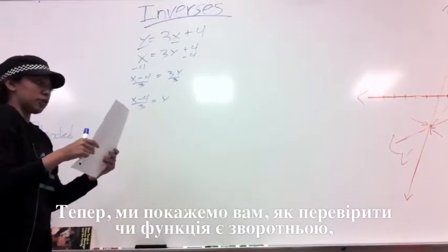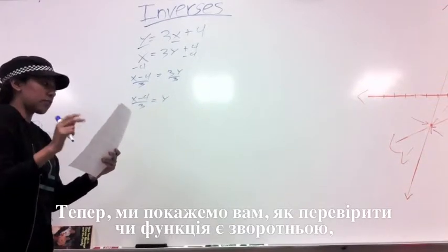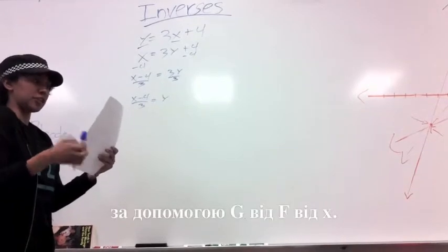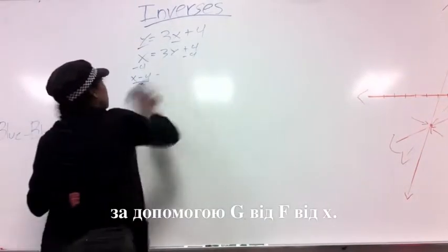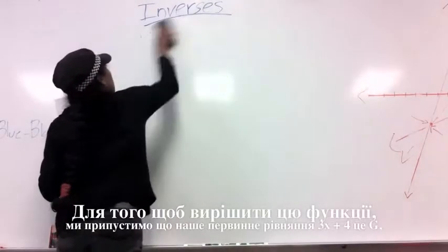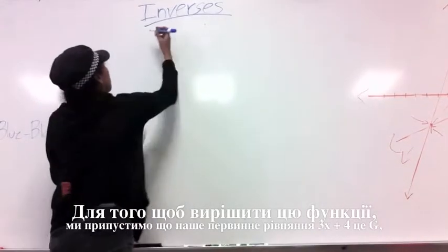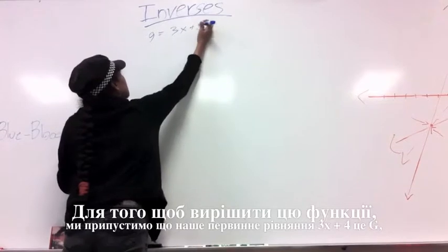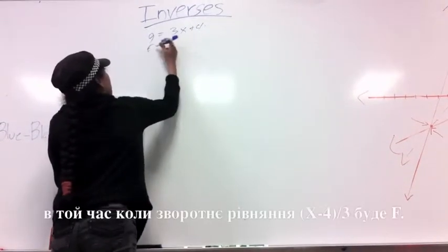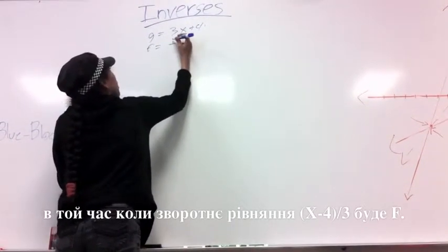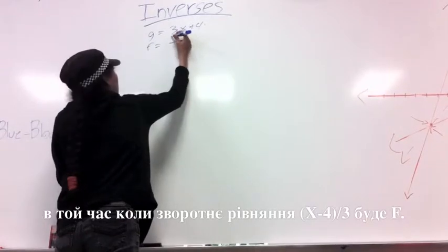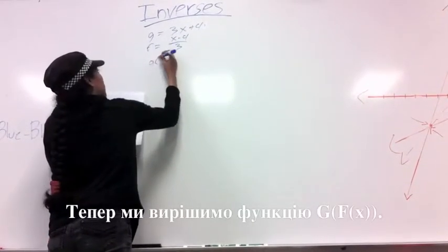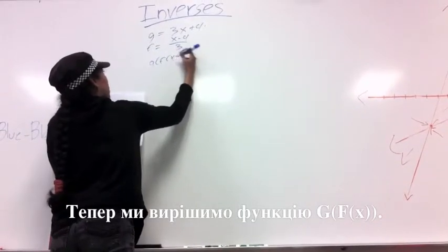Now we will show you how to check if a function is inverse by using g of f of x. For this problem, we will have g equal 3x plus 4 and f equal its inverse, which is x minus 4 over 3. And this is our problem here, g of f of x.